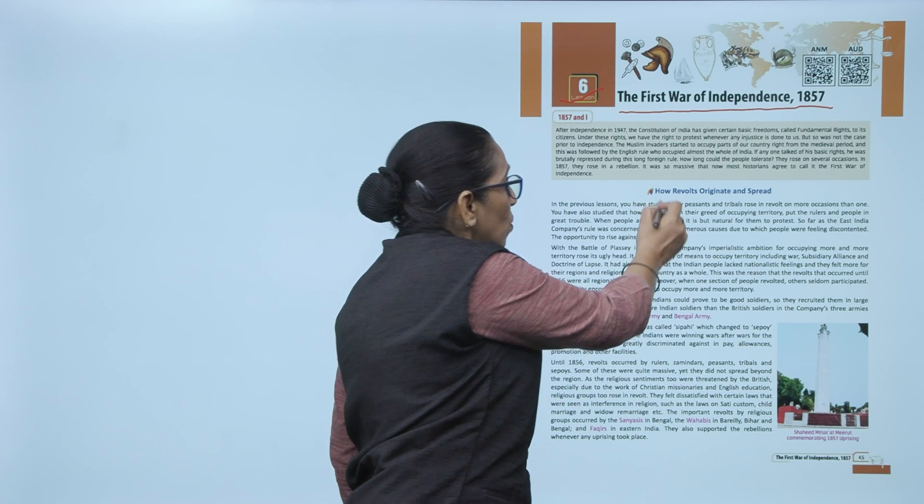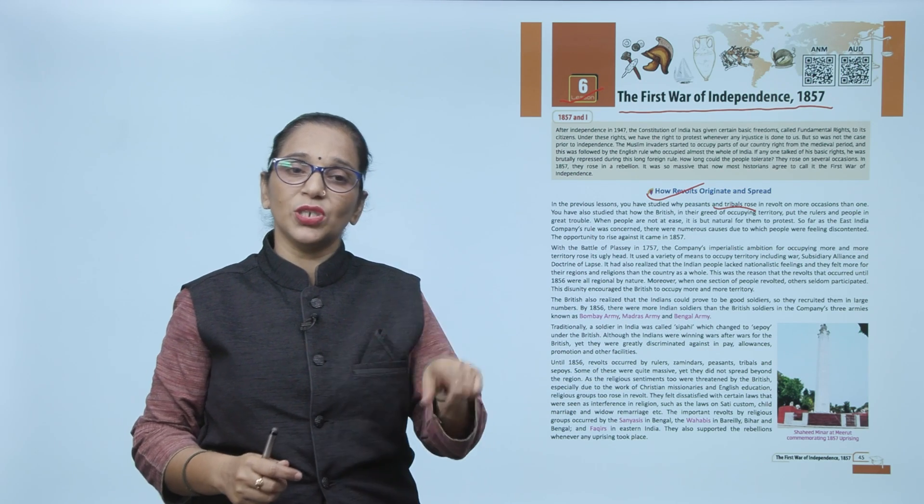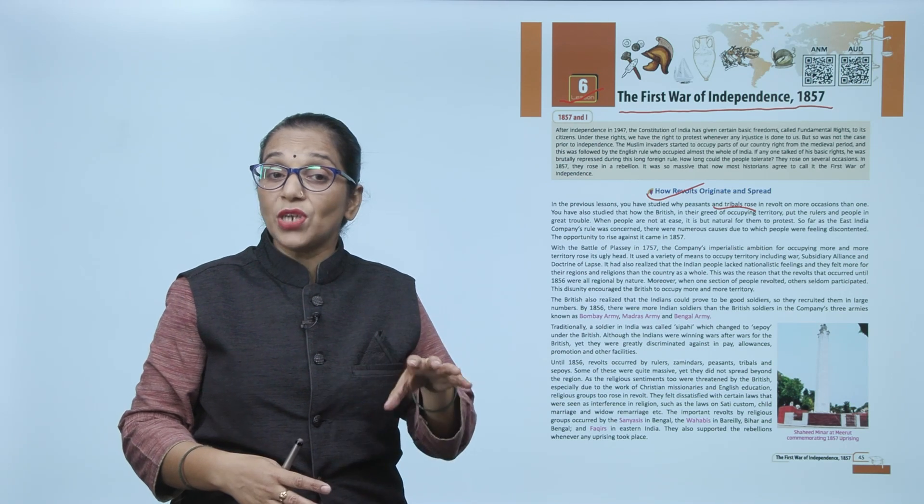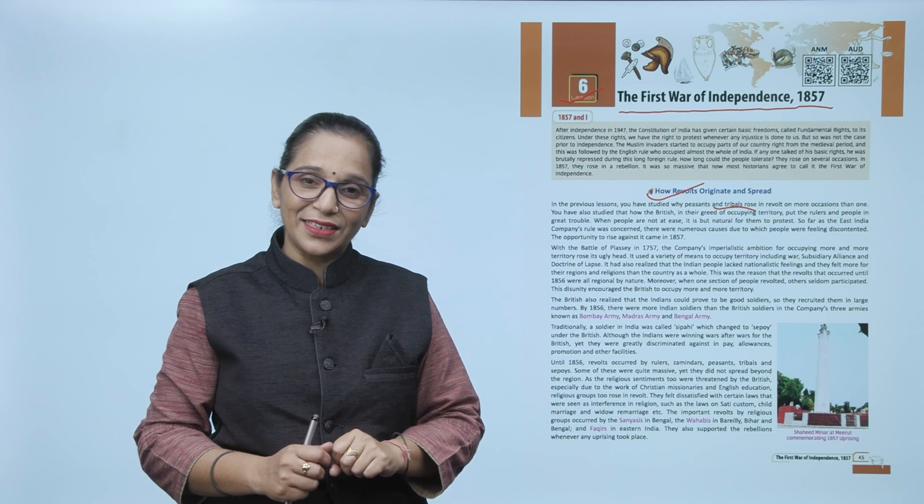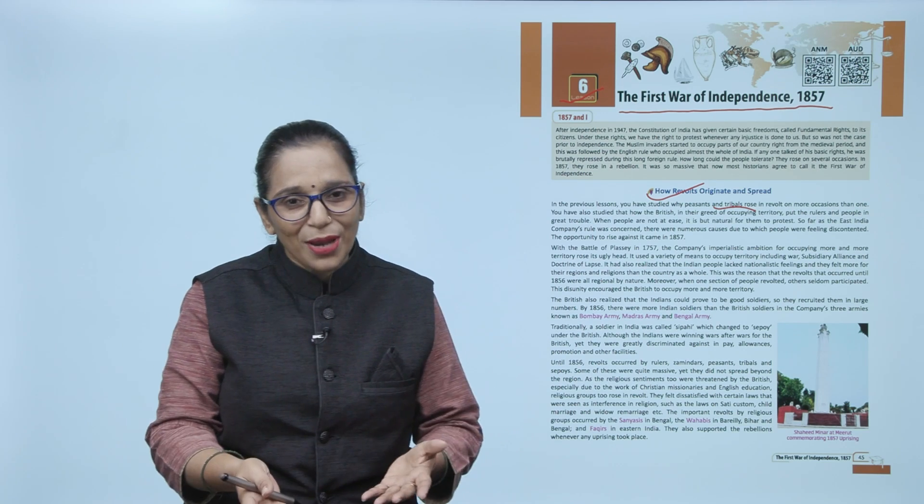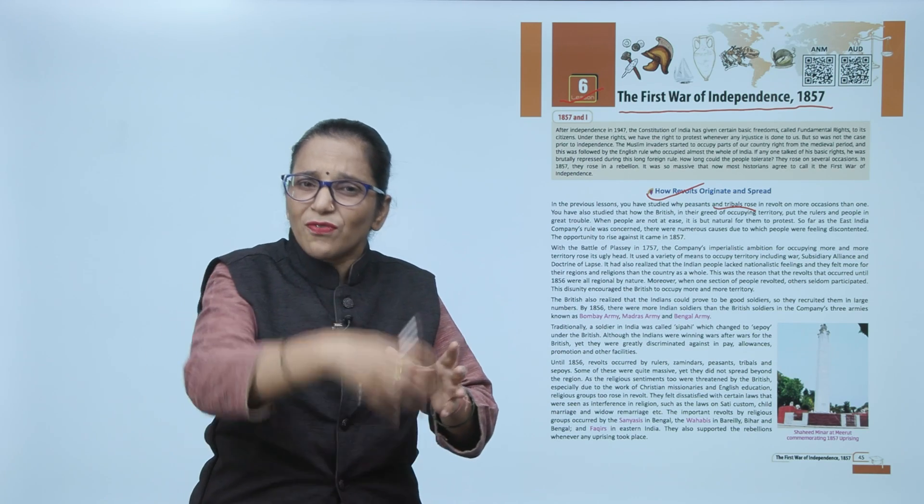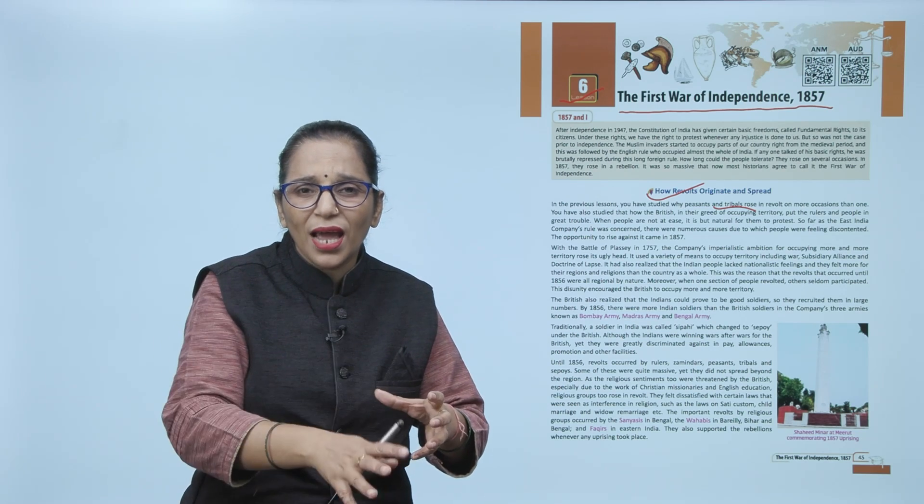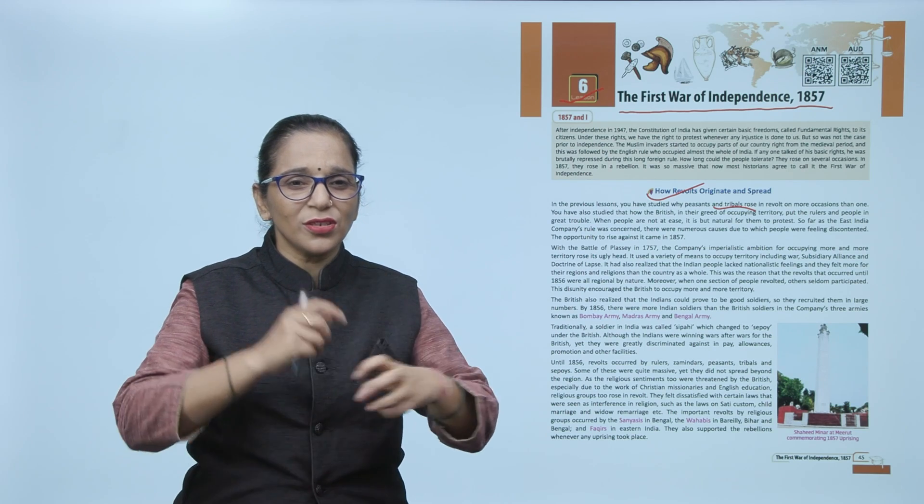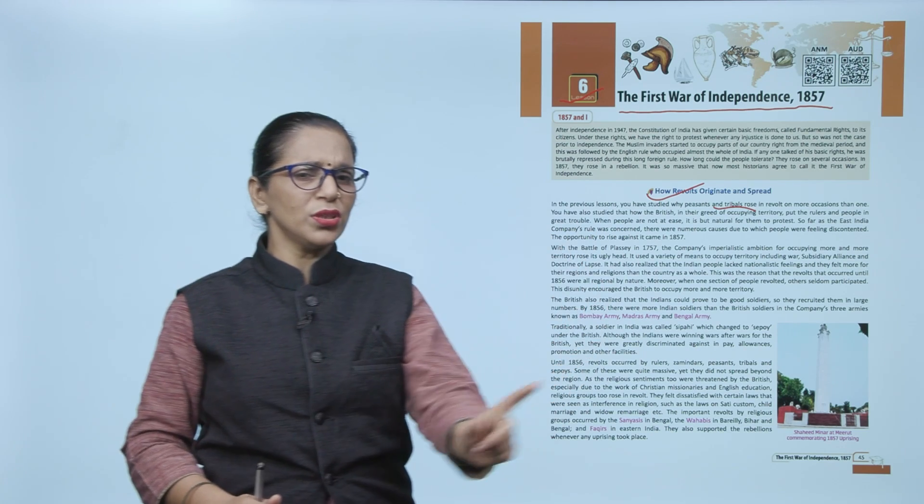So let's start the chapter - how this 1857 revolt originated and spread in different parts of India. The tribals, the peasants, and other communities were now discontented with the British policy. The British had introduced laws and policies which were not in favor of different communities of India. The educated middle class, elite and businessmen came to know that they are troubling us, interfering in our politics, in our social life, in our economic life, even in our cultural life. This dissatisfaction gave rise to the spark of the 1857 revolt.